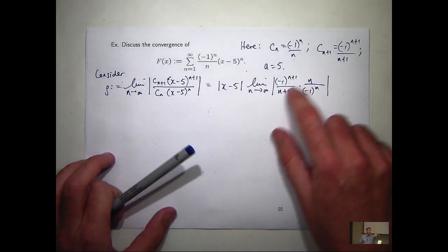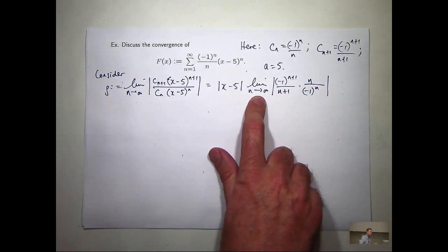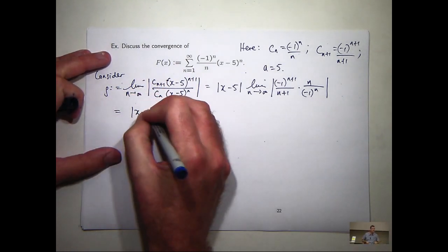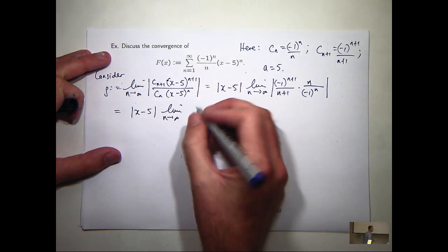And why can I take the absolute values away from the n and the n plus 1? Well, because n's large and positive. So, I can actually get rid of those absolute values and come up with something like this.